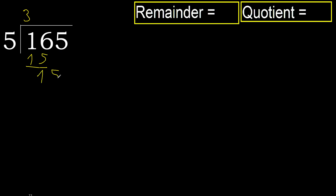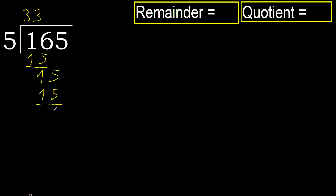Next, bring down 5. We now work with 15. Multiply 5 by 4 is 20 — 20 is greater. Multiply by 3 is 15 — 15 is not greater. Subtract: remainder is 0.